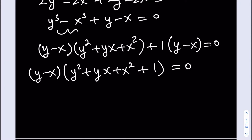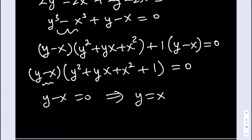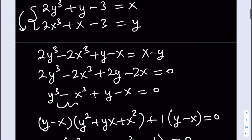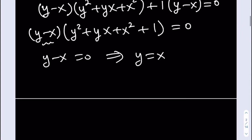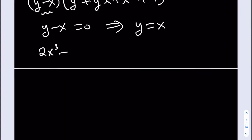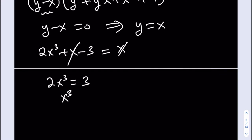From y - x = 0, we get y = x. But y = 2x³ + x - 3, so 2x³ + x - 3 = x. The x cancels out, giving us 2x³ = 3, then x³ = 3/2, and x = the cube root of 3/2. This is one of the solutions.